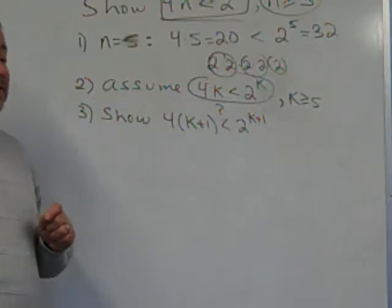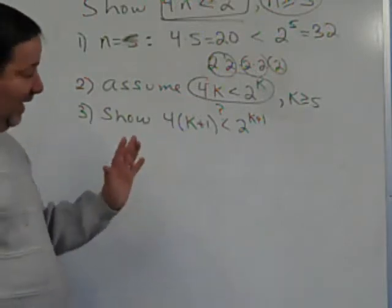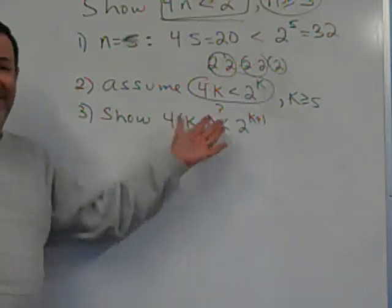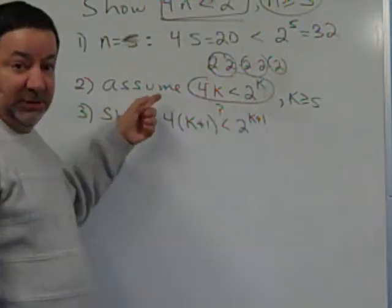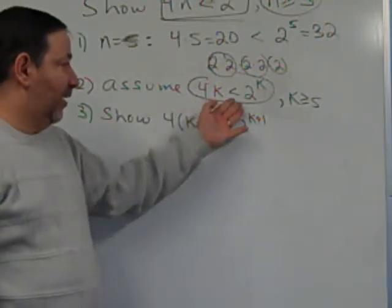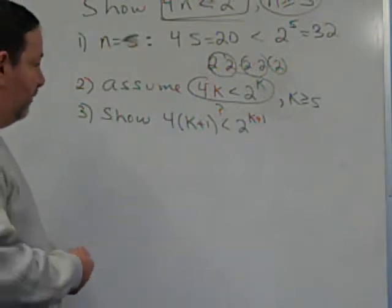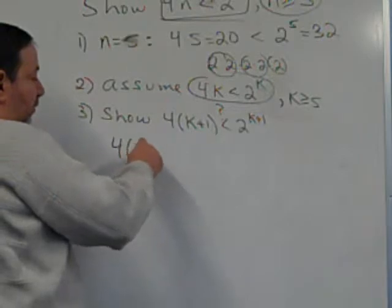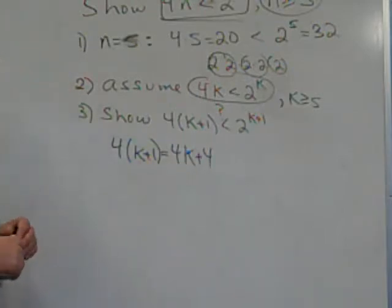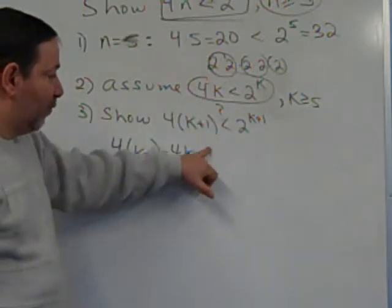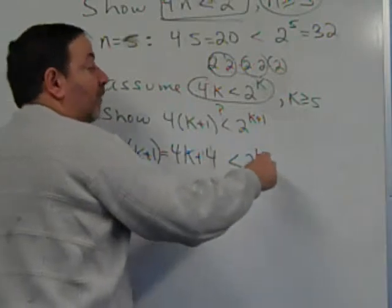Now we want to verify this. You can use any mathematics that's allowed — divide both sides by 7, add 9 to both sides, whatever you want. And you are allowed to use the assumption. So let's start with the left side: 4 times (k plus 1), which is 4k plus 4. Usually you use the induction step. We know that 4k is less than 2 to the k, and we add 4 to both sides.